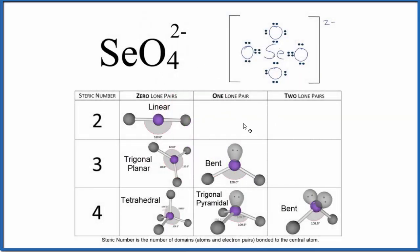We could also use what's called the AXE notation here to figure out the molecular geometry for SeO4^2-. A is the central atom, that's the Se here. X is the number of atoms bonded—we have one, two, three, four atoms bonded. E is the number of lone pairs, but we don't have any lone pairs on the central atom, so that's zero, or you could just leave it as AX4. If you look this up, you'll find that is a tetrahedral molecular geometry.